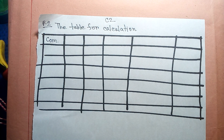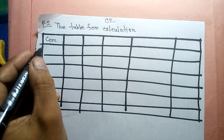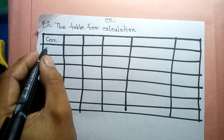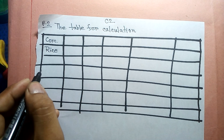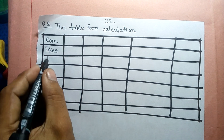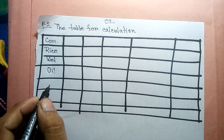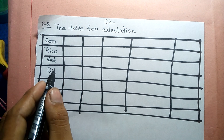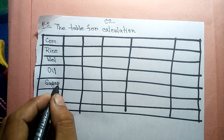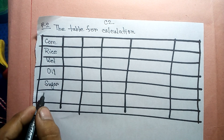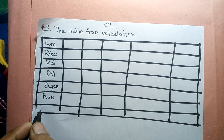The items in our table include: rice, wheat, oil, sugar, and other goods. We also have columns for weight (W), price, and the RCC total for our index calculation.